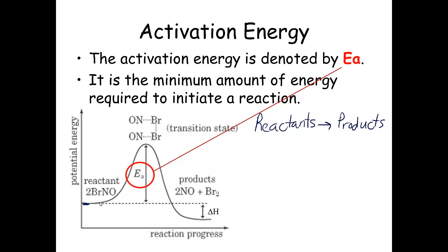What's happening is you have to get energy — this is where bonds are being broken. So of my reactants, in this case I have BrNO — I'm breaking the bonds that are holding these together. Look at what happens: this is endothermic, and that's what that's showing you. You have to climb the hill, and climbing the hill takes energy. Endothermic takes energy; it takes energy to break the bonds.